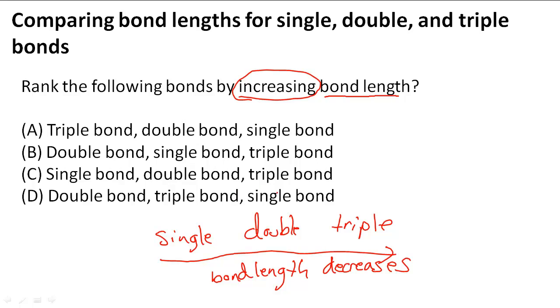We want to go in an order that increases it. Instead of going this way which decreases it, we're going to go the other way. So we're going from triple to double to single, and that's bonding in increasing bond length.